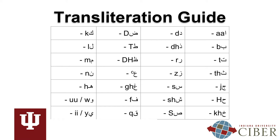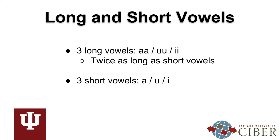The last two letters, W and Y, can be pronounced as long vowels — U, E — or as consonants, W, Y. The transliteration guide on the last screen included three long vowels: A, U, E. In addition to these long vowels, there are three short vowels: A, U, E. Long vowels are twice as long as short vowels. Long vowels will be written with double letters — AA, UU, EE — and short vowels will be written with just single letters.